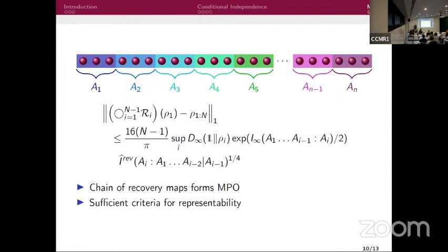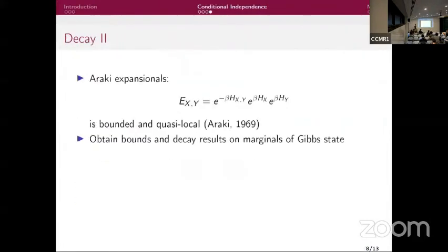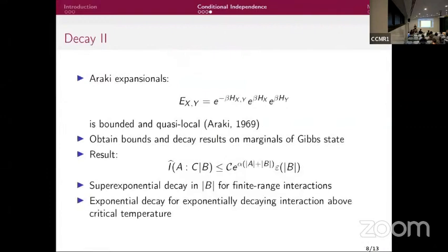Q&A: On translation invariance and trees — relaxing translation invariance is very hard because the Araki expansion results have been around for a while and no one has managed to extend them to the non-translation-invariant setting. The same obstruction applies to trees.